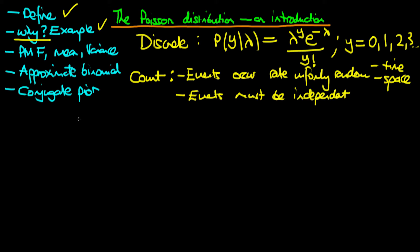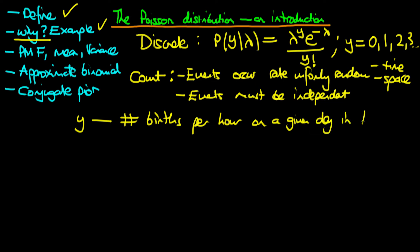One example is where y measures the number of births per hour on a given day in a particular hospital. We can imagine these events occur uniformly at random throughout the day — so they're uniformly random through time. We also assume the events are independent, which is trivially true for births, because an individual giving birth does not make it more likely that another individual will give birth.